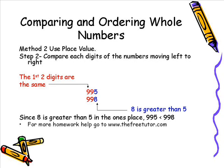Step two when using place value is to compare each digit of the numbers moving from left to right. This is key. You want to compare moving from left to right. Now as you can see in our picture here in our example the first two digits are the same. Both the hundreds place and the tens place in both numbers contain a nine. So they are exactly the same.